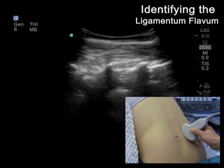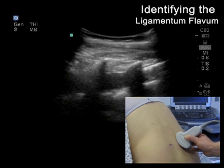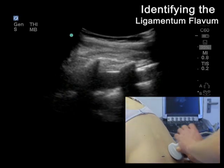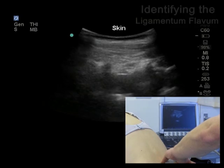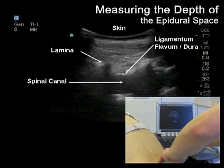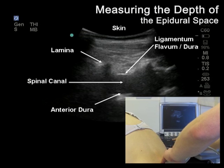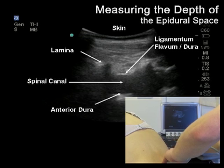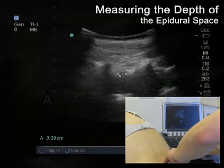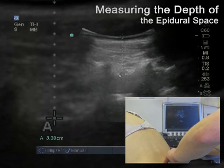From the para-median plane, the probe is angled medially. This allows visualisation through the interlaminous space, demonstrating the echo-bright ligamentum flavum and dura. Occasionally, as in this case, a double line is apparent, representing the ligamentum and the dura seen separately. The intrathecal space is dark as it does not reflect ultrasound, and the anterior elements of the epidural space and vertebral body can also be seen. This image can then be frozen and the depth of the epidural space measured.